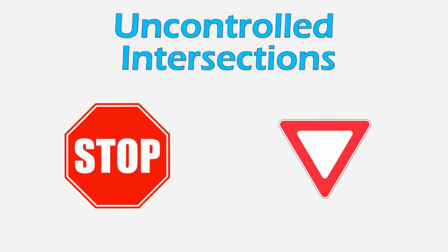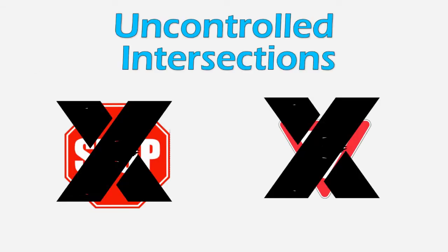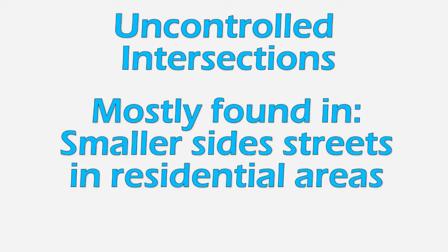Uncontrolled intersections are intersections that are not controlled by stop signs or yield signs. These types of intersections are usually found on smaller side streets in residential areas, usually in older neighborhoods, but sometimes can be found in your neighborhoods as well.